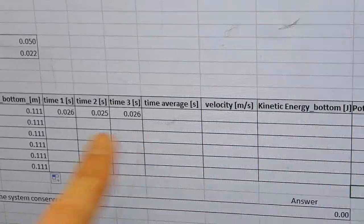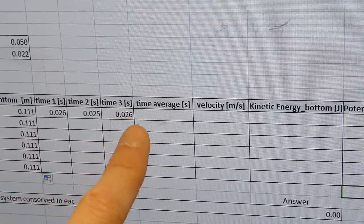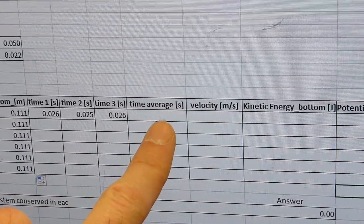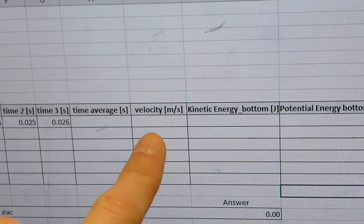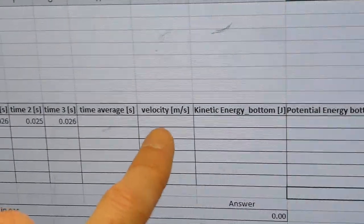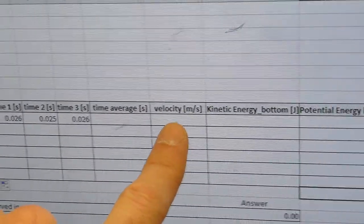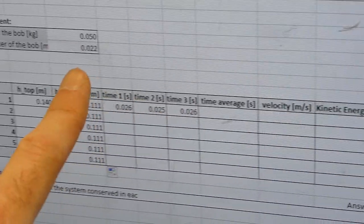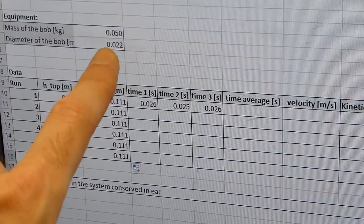Over here you are calculating the average of those 3 times. Please use Excel formulas, don't calculate it outside of Excel. Then here you are calculating the velocity, or actually better, the speed, based on the average time and the diameter of the bob.